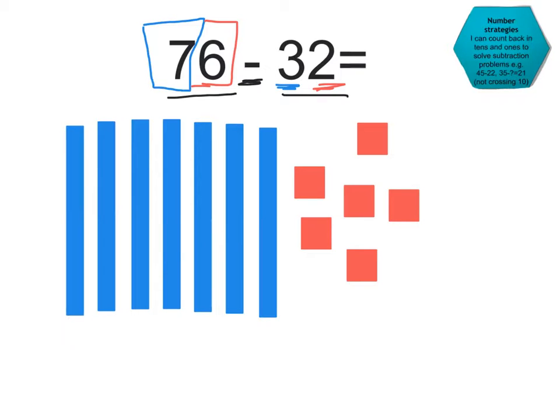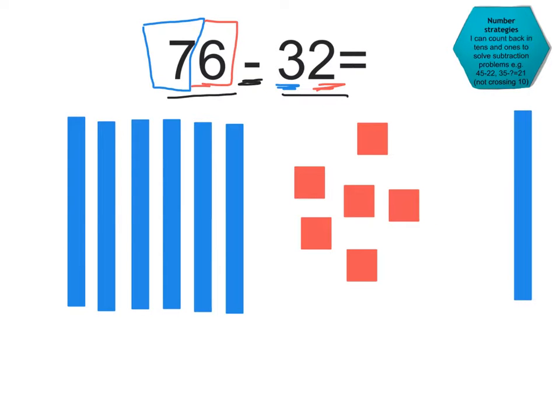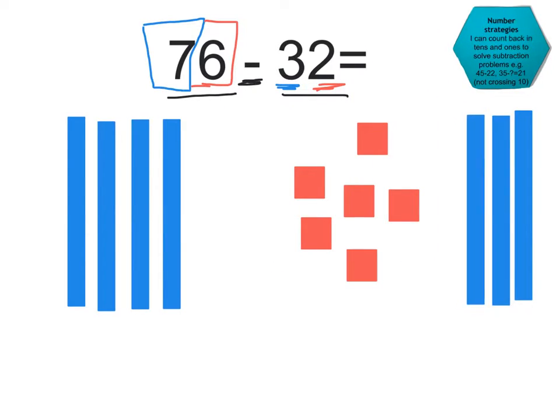So I've got 7 10s, and all I want to do is to take away 3 10s. So 1, 2, 3. So that's my 3 10s taken away. And my next step is to have my 6 1s, and I want to take away 2 1s. So 1, 2.